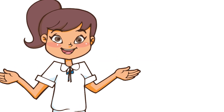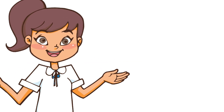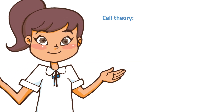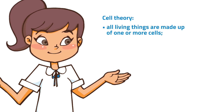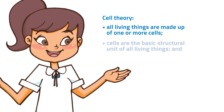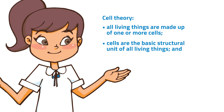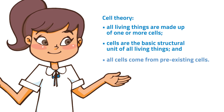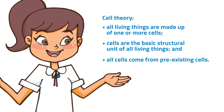At present, the cell theory is summarized as follows: All living things are made up of one or more cells. Cells are the basic structural unit of all living things. And all cells come from pre-existing cells.